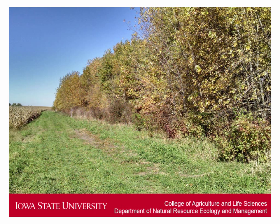These cores will be taken once per month and done according to vegetation type. Four cores will be taken from the switchgrass area every month and four cores from the wooded area of the buffer. They will be done randomly to account for spatial variation, so that we don't collect from one side of the buffer and get an inaccurate picture of what's going on.